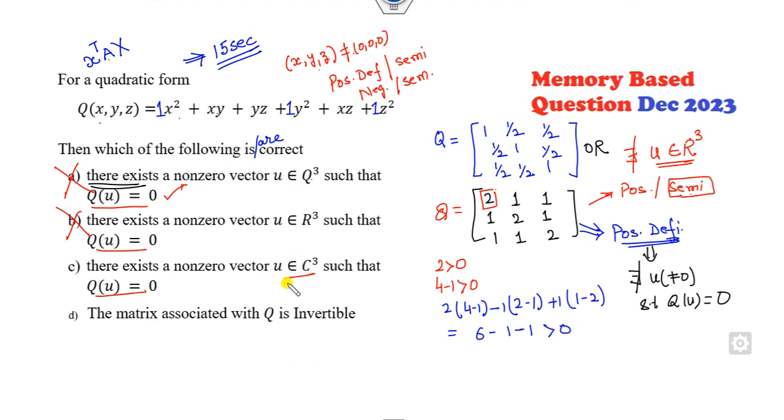Now they are talking about C, because R cube is a subset of C cube, so we can't say that immediately. The matrix associated with Q, that means when you write this matrix A, is invertible. You can see the last component is the determinant of A. The determinant of A is non-zero, that means it is invertible. So this option is correct.